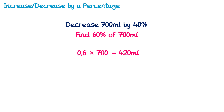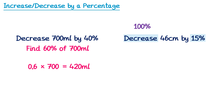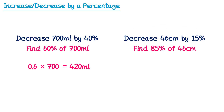Some people find this a bit confusing at first, but decreasing by 40% is exactly the same as finding 60%. Let's do a second example: decrease 46 centimetres by 15%. Since we're decreasing by 15%, we do 100% − 15% = 85%. So we find 85% of 46: 85 divided by 100 is 0.85, multiplied by 46, giving 39.1.